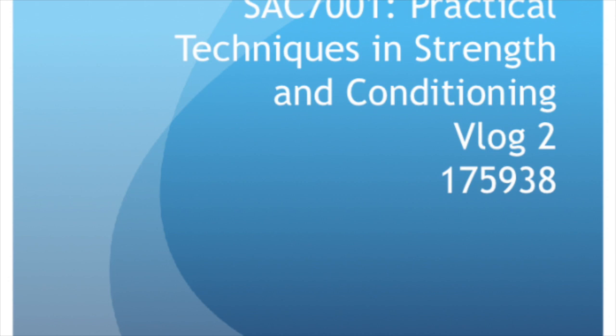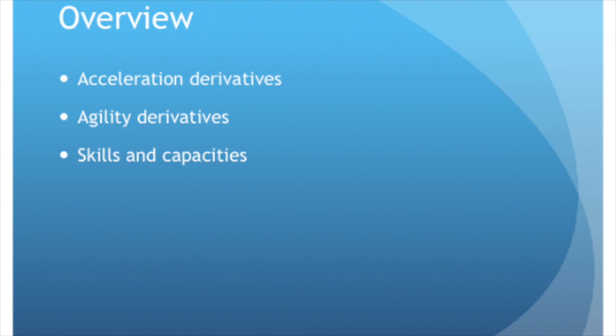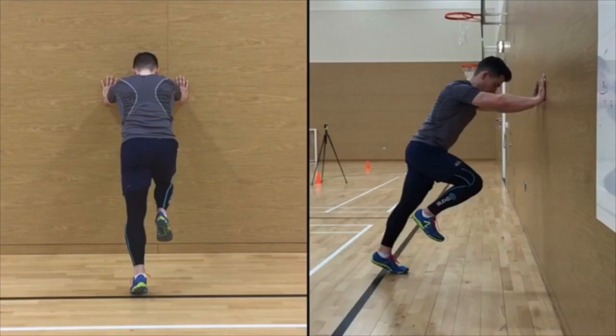This is vlog number two for the module Practical Techniques in Strength and Conditioning. The following vlog shall discuss two athletes performing derivatives of acceleration and agility. These come in the form of a wall drive, which helps the athlete generate force during the stance phase of acceleration, and deceleration, which is essential to decrease the velocity of the athlete before they change direction — laterally, horizontally, or vertically. The two athletes are from rugby and developmental American football, and have not been exposed to this type of training before.